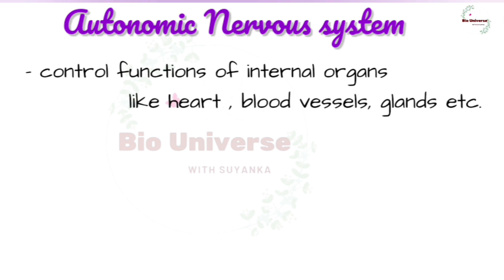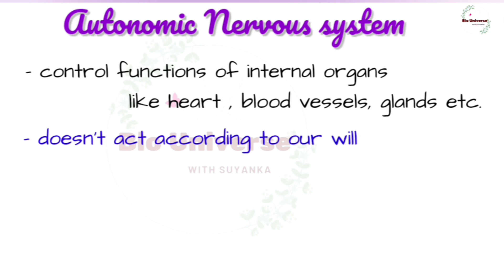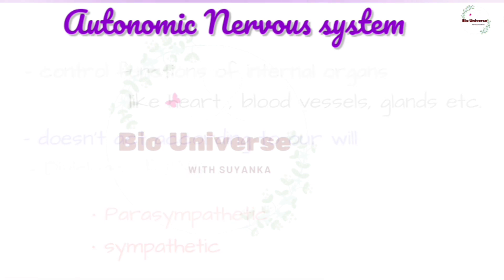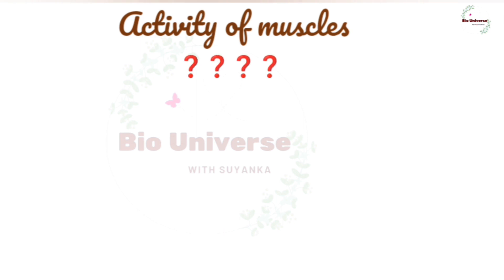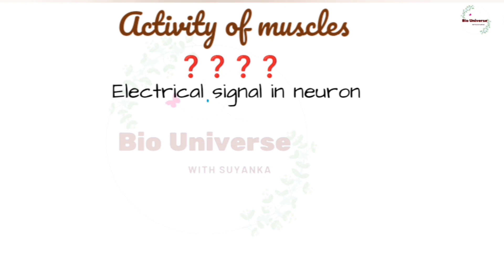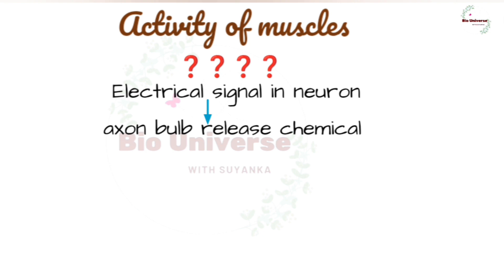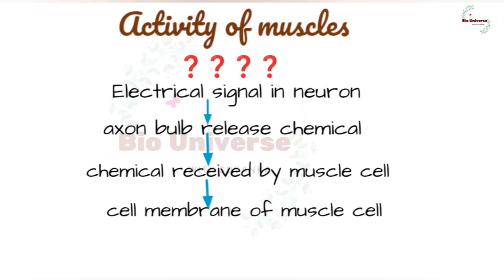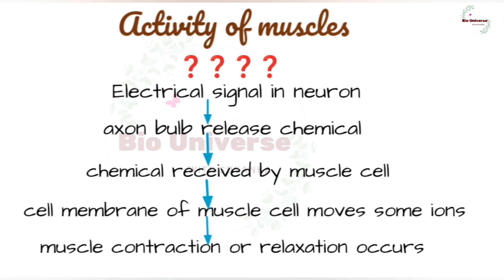The autonomic nervous system controls and integrates the functions of internal organs like the heart, blood vessels, and glands, which are not under the control of our will. It has two subdivisions: sympathetic and parasympathetic. Each organ receives both sympathetic and parasympathetic nerves, and the two types have opposite effects — if one is stimulatory, the other is inhibitory. When an electrical signal from a nerve cell reaches a synapse, it causes the axon bulb to release a chemical at the junction between the nerve cell and the muscle cell. This causes the muscle cell membrane to move certain ions, triggering a series of changes that ultimately cause the muscle cells to contract or relax.